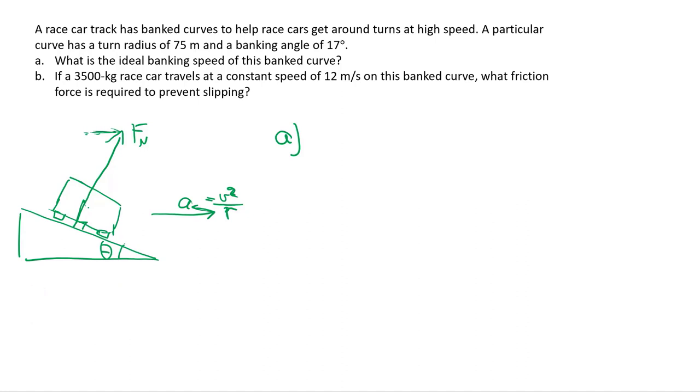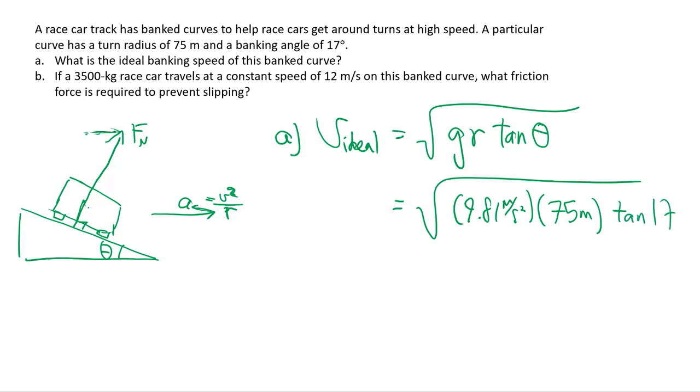So for the case of the ideal banking speed, this one we derived in class already, so you can just use it straight off the bat. But it's basically solving the whole situation with no friction included, and we'll see why it's important to know this speed heading into part B. It's the square root of g times r times tan theta, and this is just calculated work. In this case, theta is 17 degrees, gives us pretty much exactly 15 meters per second.